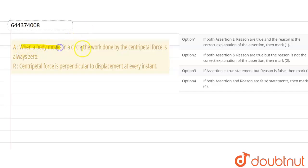When a body moves in a circle, the work done by centripetal force is always zero. This is the assertion. And the reason is that the centripetal force is perpendicular to displacement at every instant.